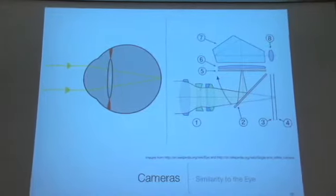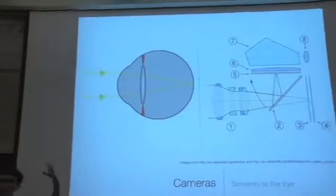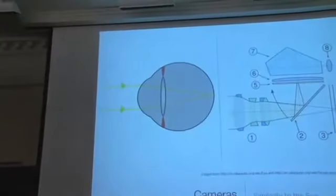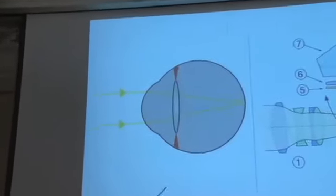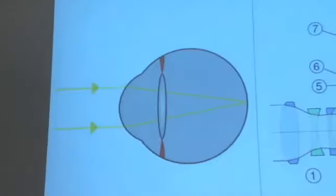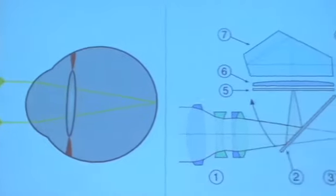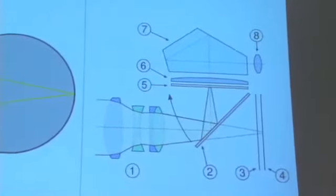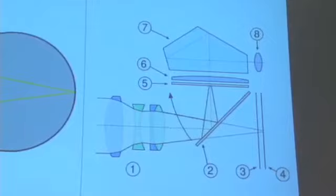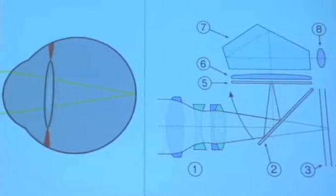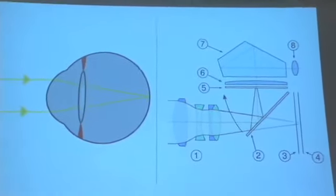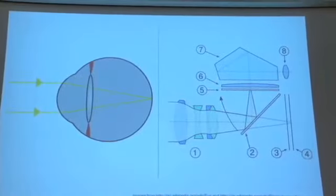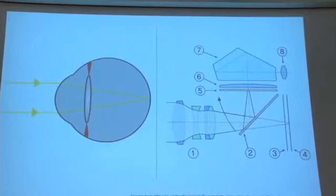We are focusing, we are inputting light from a scene, we are focusing it using some lens, and we are capturing it using some means of capturing the light. So just like our lens focuses the light, our camera lens will focus the light, and just like our fovea will capture the detail in a particular scene, so will our sensor.